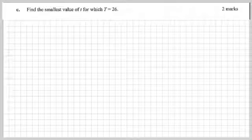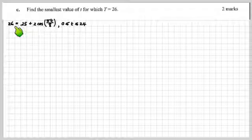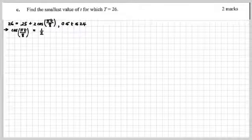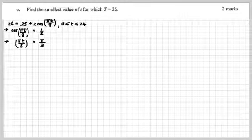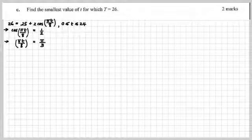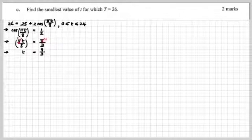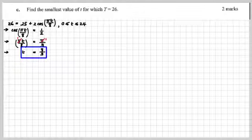Next question, find the smallest value of t for which the temperature is 26 degrees, the smallest value of t, in other words, the earliest time. This looks pretty easy if we just rearrange that around. We're going to get cos of πt/8 is going to be a half. Now think about that, when does cosine of anything equal a half? Well, the anything must be π/3, a π/3, quadrant 1 value. Now we solve it for t, and we get t is 8/3, and that is our answer. That's a 2 mark question, we're going well.